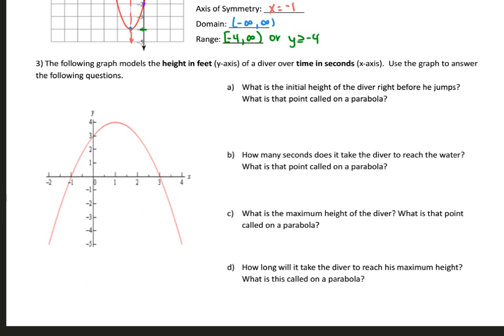The next problem says the following graph models the height in feet of a diver over time in seconds. Use the graph to answer the following questions. What is the initial height of the diver right before he jumps? The initial height is basically what is the height when time is equal to 0. So the initial height of the diver is 3, so that's going to be 3 feet. The diver reaches the water at this point, which means it takes 3 seconds.